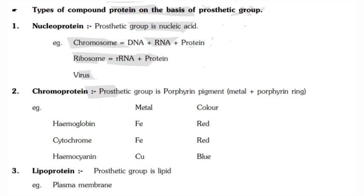Viruses are composed of nucleoprotein molecules — nucleic acid and protein. The second type is chromoprotein, where the prosthetic group is a porphyrin pigment, meaning a metal ion plus a porphyrin ring. Examples include hemoglobin, where the metal ion is iron and the color is red, and cytochrome, where the metal ion is also iron.